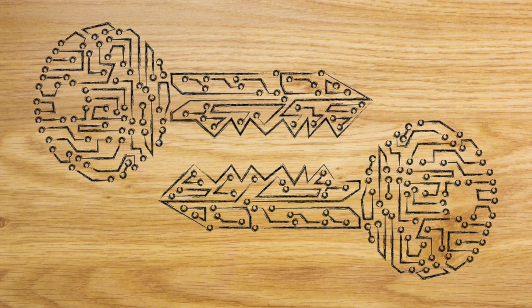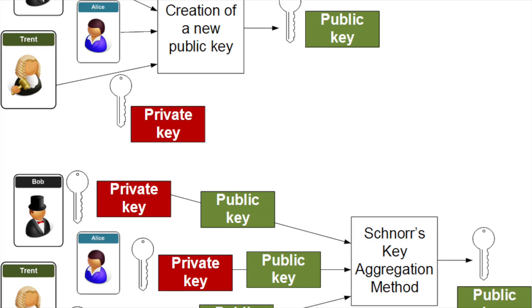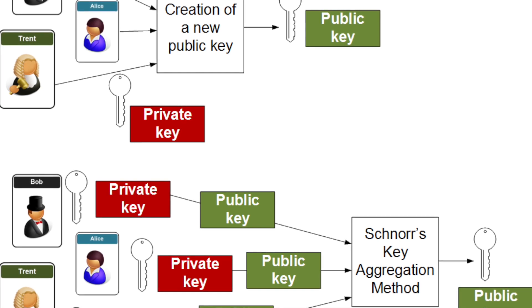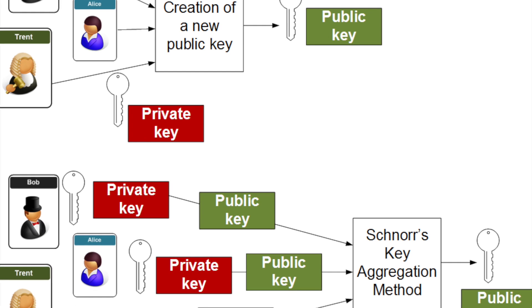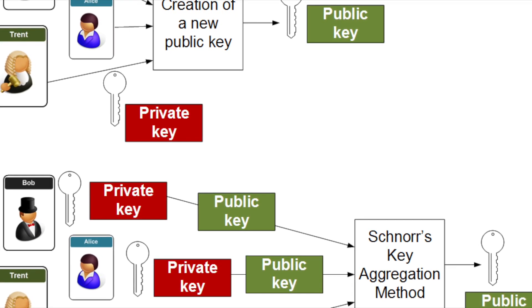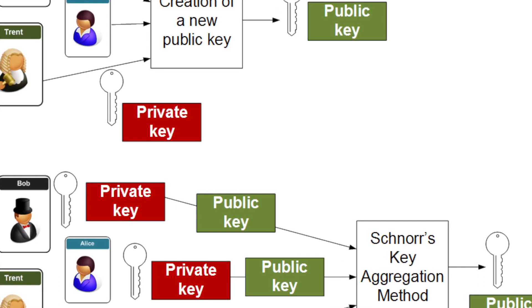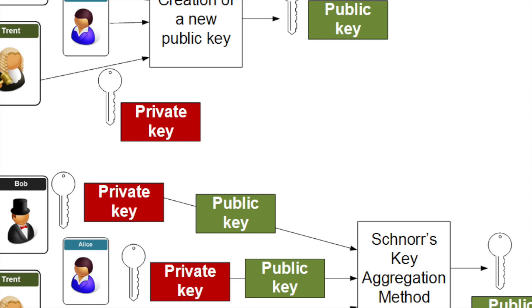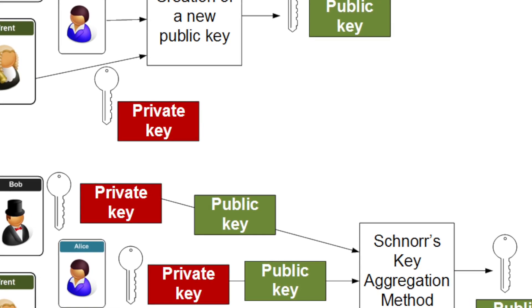The biggest advantage of Schnorr signatures is that they can use multiple signatures inside a complex Bitcoin transaction to create a single signature. Numerous signatures are aggregated into a Schnorr signature which does not reveal its inner contents. The transactions can be based on either the Lightning Network or smart contracts, and other users won't be able to tell the difference.